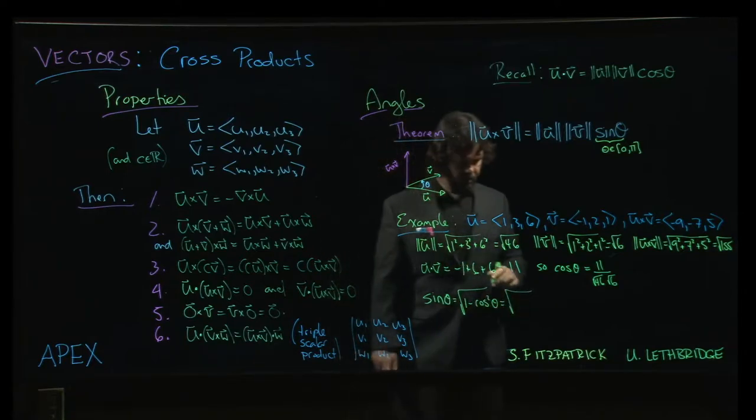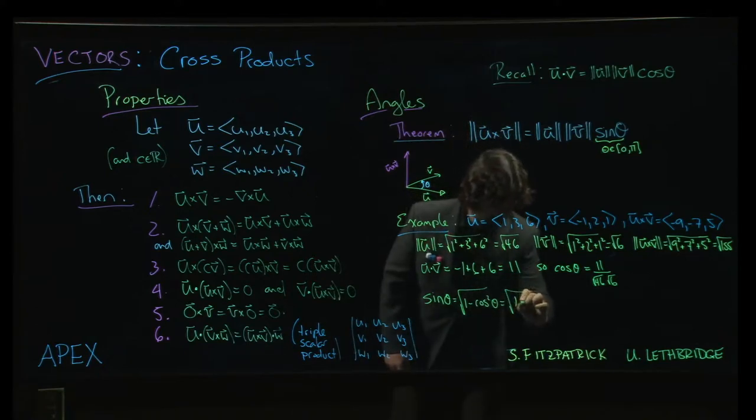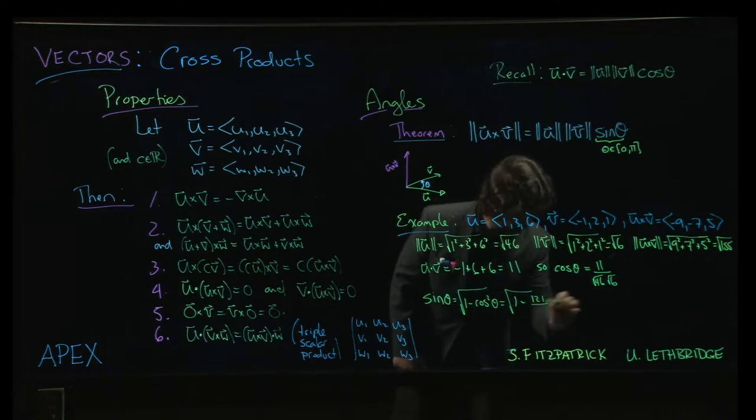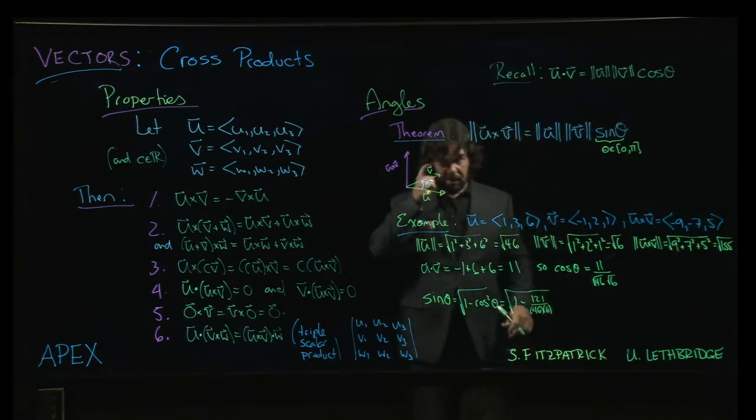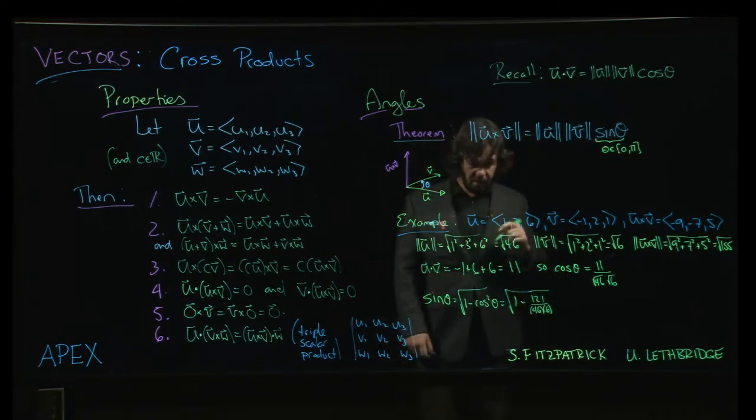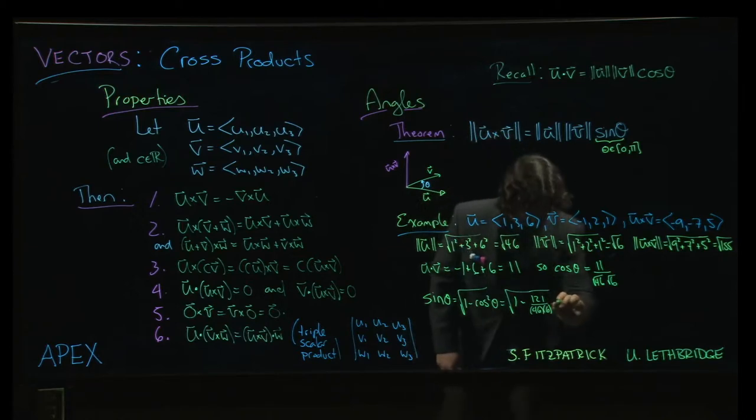So it's going to be the square root of 1 minus 121 over 46 times 6. And yeah, I know we could have just put it in a calculator by now, but where's the fun in that? 6 times 46. 240 plus 36, 276.